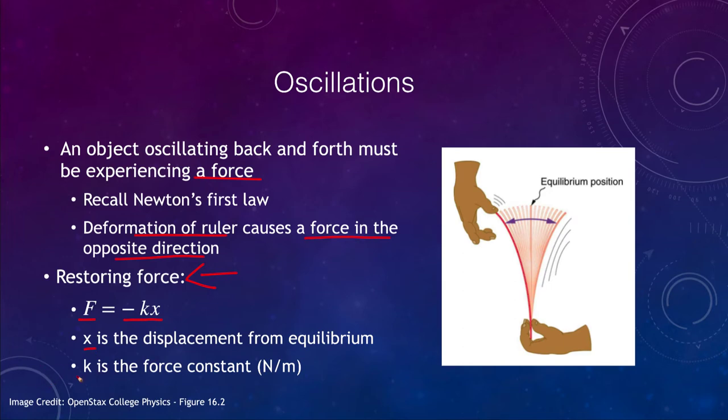k is the force constant, which depends on how stiff the object is. A stiffer object has a larger force constant, and a less stiff object has a very small force constant.